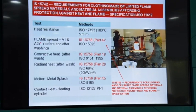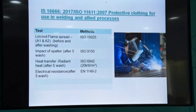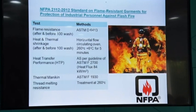For workwear standard IS 15742, tests include heat resistance per ISO 17493 — 180°C for 5 minutes — along with flame spread, convective heat, radiant heat, molten metal splash, and contact heat. For welder cloth standard IS 1666, two additional tests are required compared to workwear: impact of spatter and electrical resistance. When exporting to USA-based countries, the NFPA 2112 test is also required.